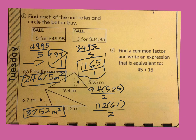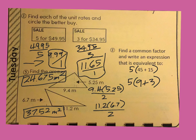Next, it wants us to find a common factor. So 5 goes into 45 nine times, and 5 goes into the other value three times. We can also take out a 3, multiply it by 5 to get 15, giving us 3 plus 1. There's your bellwork — let's move on.